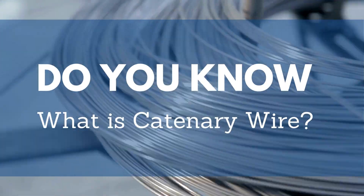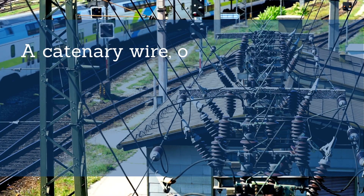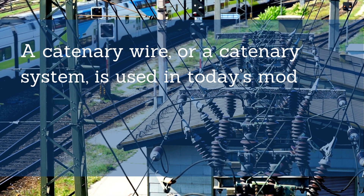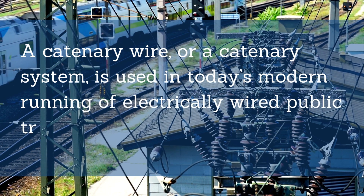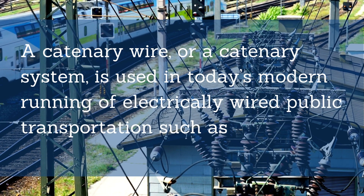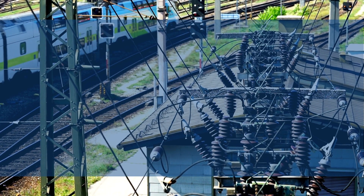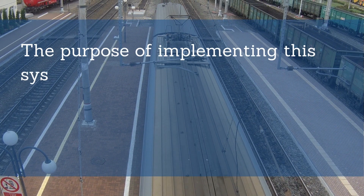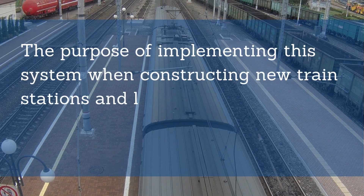Do you know what a catenary wire is? A catenary wire, or catenary system, is used in today's modern running of electrically wired public transportation, such as in trains. The purpose of implementing this system when constructing new train stations and lines, or adding new trains or trams to an existing line, is to provide power.